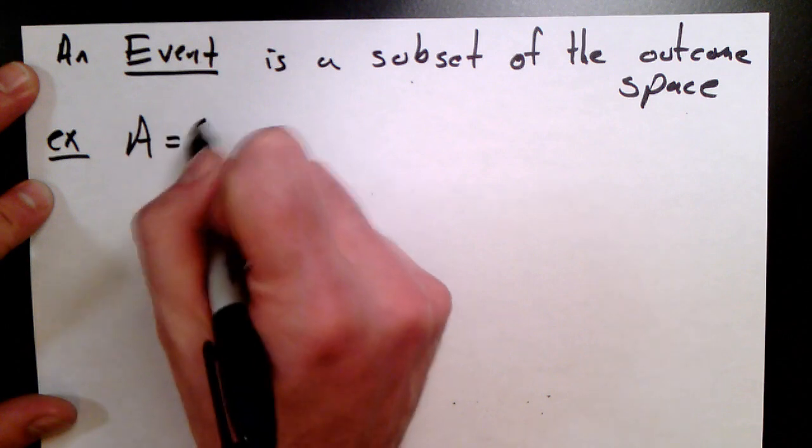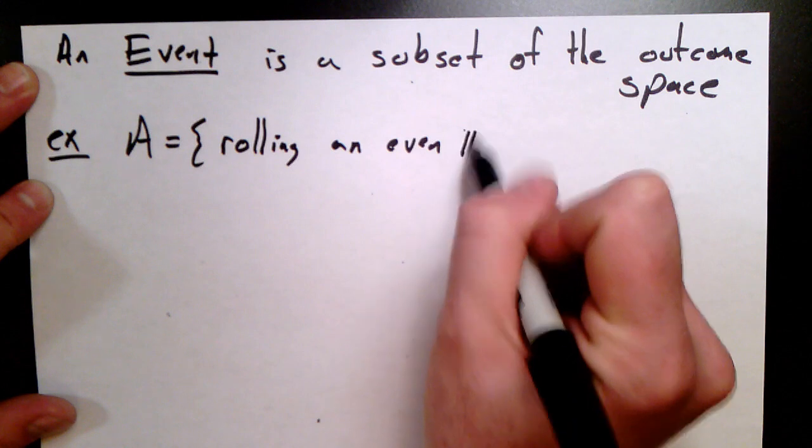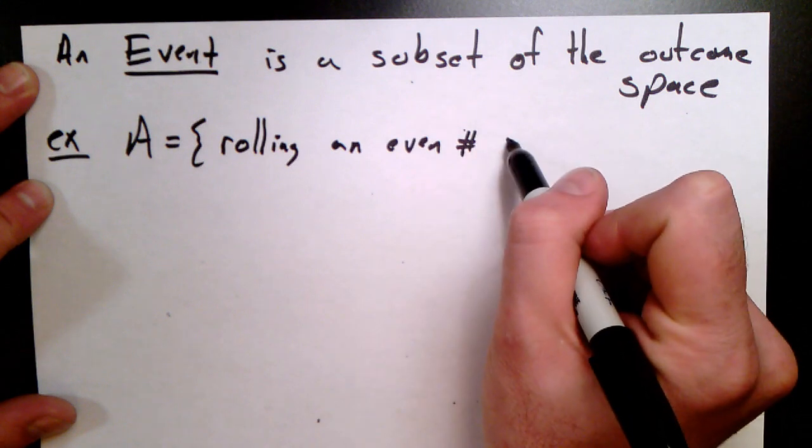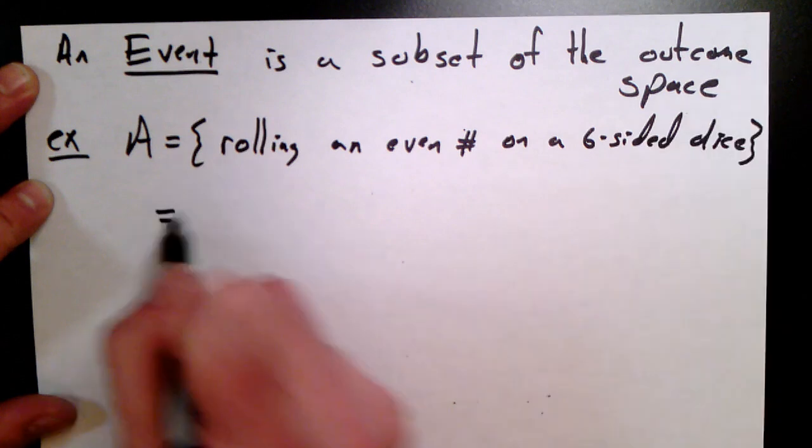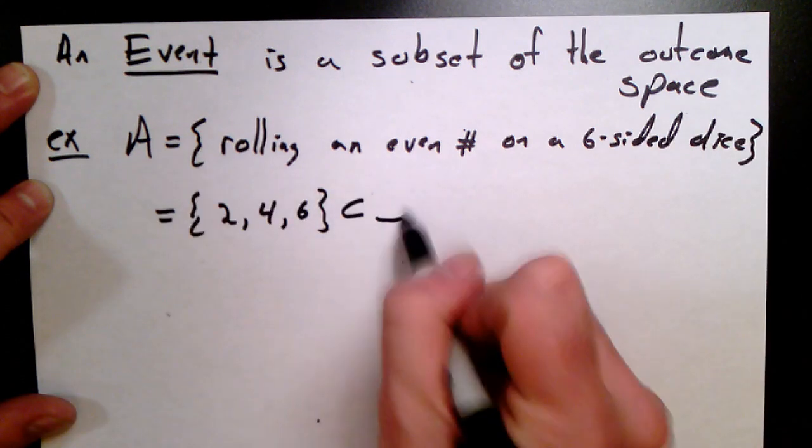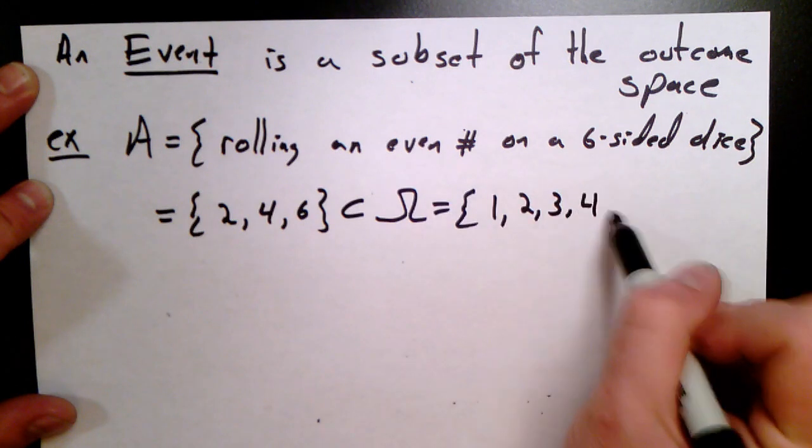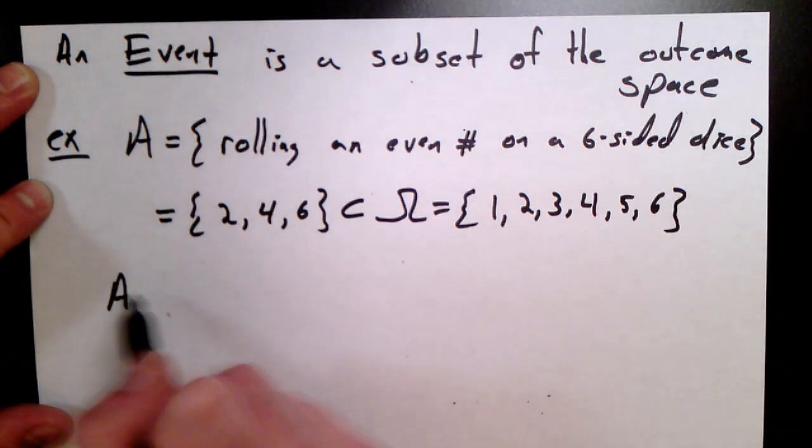So here's some examples. The first example is rolling an even number. So let's think about the example of the six-sided die. So we're going to roll a six-sided die. We're going to ask, what's the chance that there's an even number? Well, that is just a subset of the outcome space. It is, in fact, just the set of numbers four, two, and six. And that's clearly a subset of the outcome space.